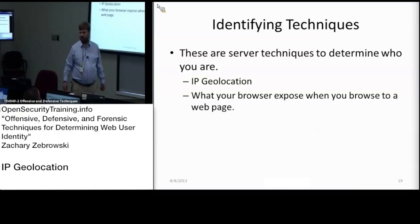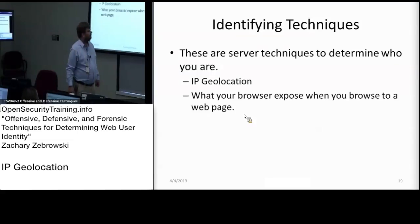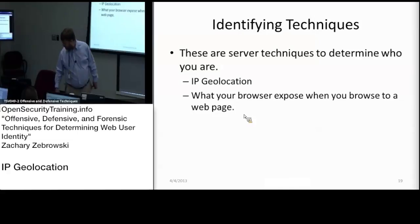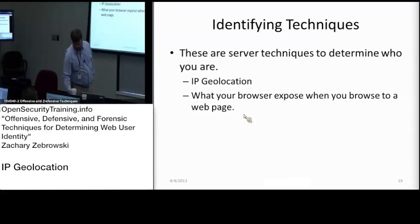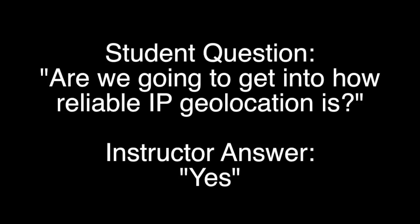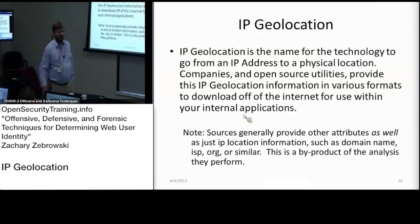Two different things. One, which is IP geolocation. IP geolocation essentially is a database that contains a whole bunch of IP addresses and locations. And the other thing we'll talk about is what your browser exposes when you browse to a web page.